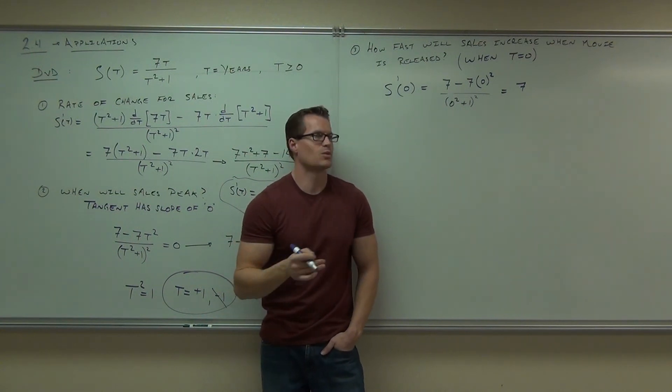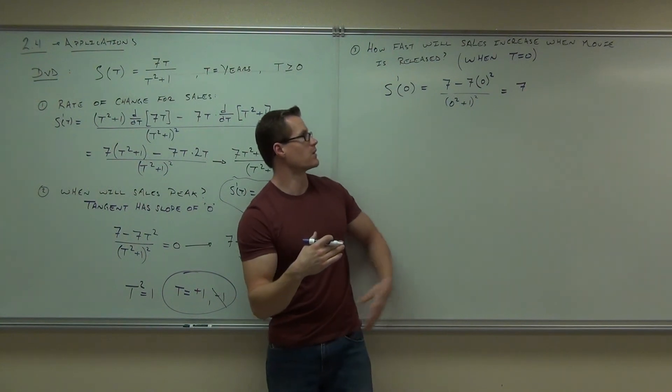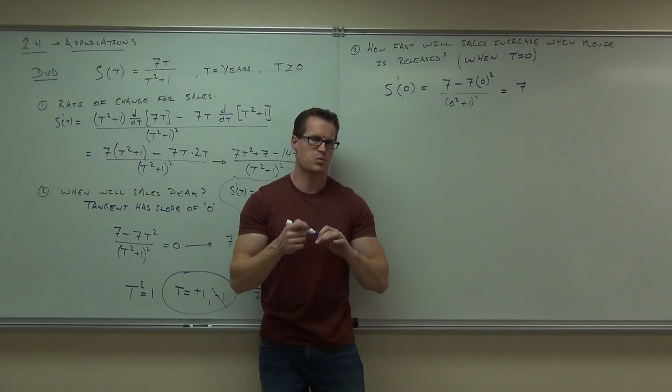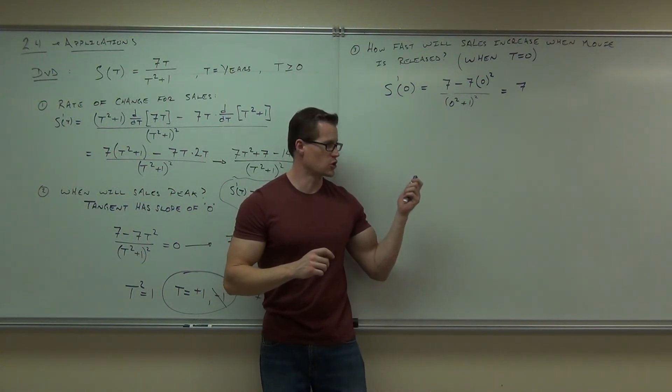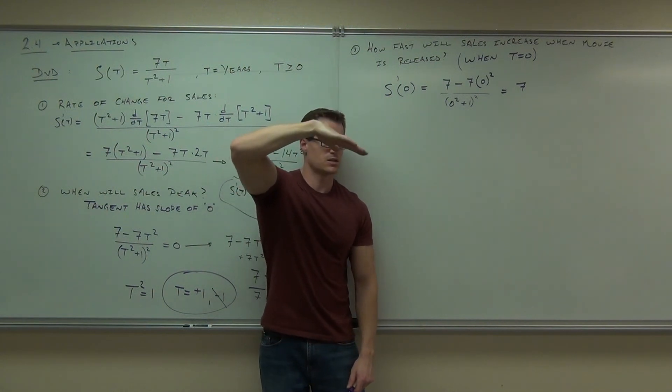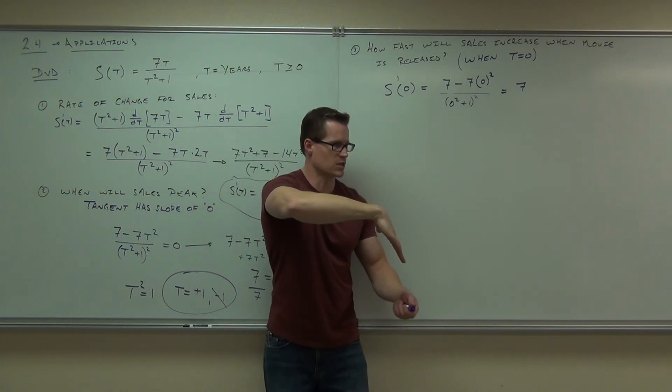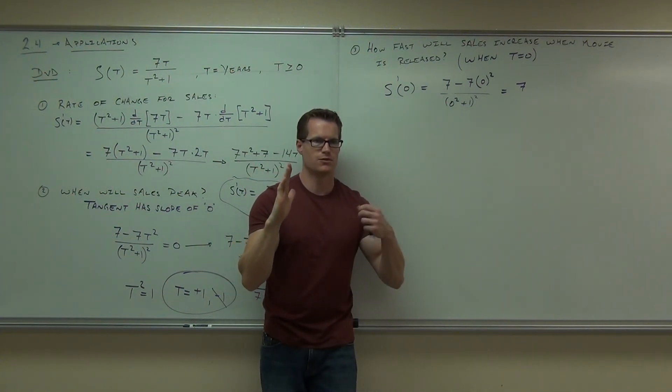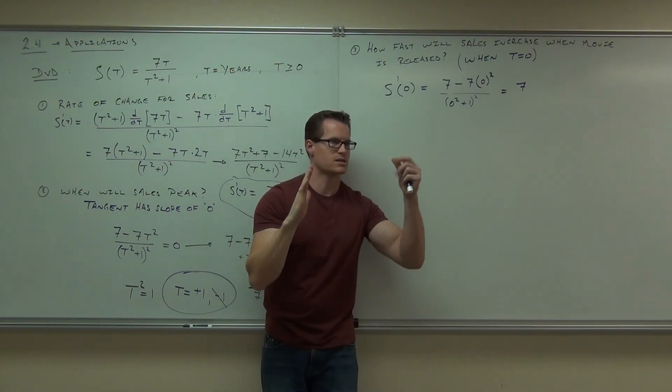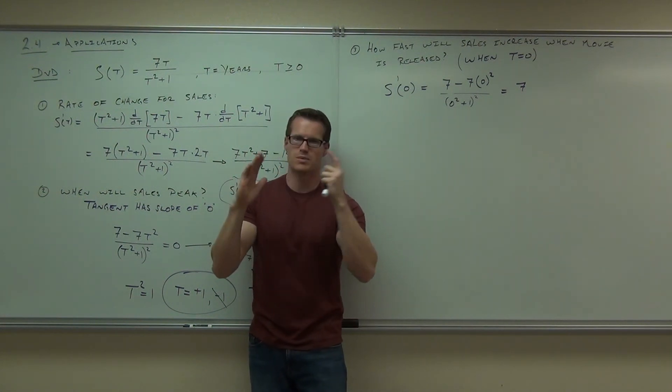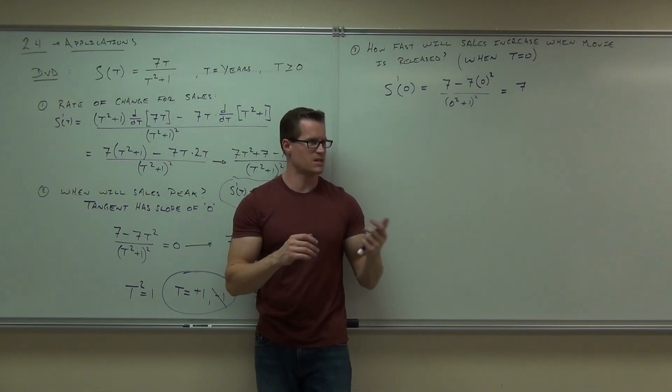At t equals 1, it's going to be 0, right? If you plug in 1 here, you get 0. That's how we get the 1. So it's going to be 0. So the slope is probably decreasing up until that point, and it continues to decrease negatively as your sales fall off. So right at the moment when you release it, that's when you're going to have the quickest sales. When are they going to peak? Well, they're going to peak after a year. After that, they're going to fall off.